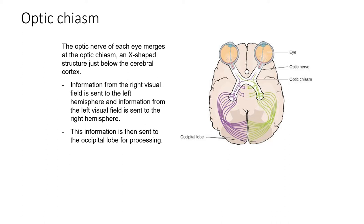The optic nerve of each eye merges at what is called the optic chiasm — an X-shaped structure just below the cerebral cortex. This image shows the optic chiasm at the front of the brain and the pathways to the occipital lobe at the back, where visual sensations are processed into meaningful perceptions. Information from the right visual field is sent to the left hemisphere, and this information is then sent to the occipital lobe for processing.